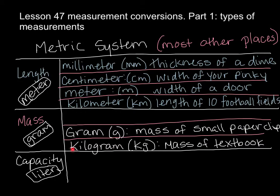A kilogram — kilo means a thousand — is a multiple of the gram. A kilogram is 1,000 grams, abbreviated kg, and it's about comparable to the mass of a textbook. If you lifted up a textbook and felt how heavy it was, that would be about a kilogram — one thousand grams.